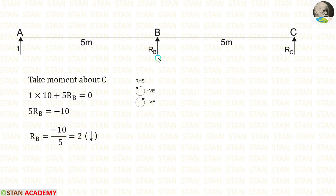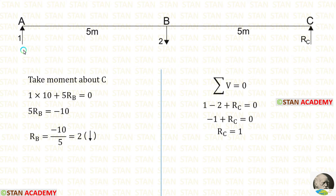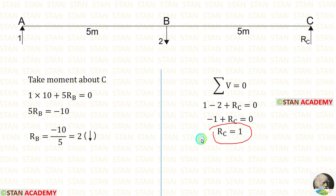We are getting a negative value, which means the assumed direction of RB is incorrect. Actually, RB is acting downwards. Now let us calculate RC by applying summation of vertical forces equal to 0. We are having 3 vertical forces. 1 is acting upwards, so it is positive. 2 is acting downwards, so it is positive. 1 minus 2 gives minus 1. Taking minus 1 to the right side, it becomes positive. Finally, we have got RC equal to 1.